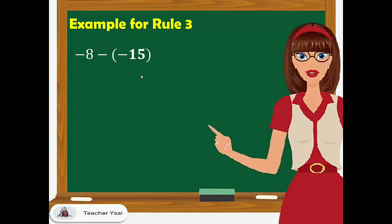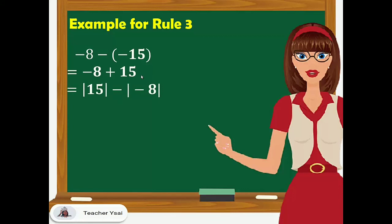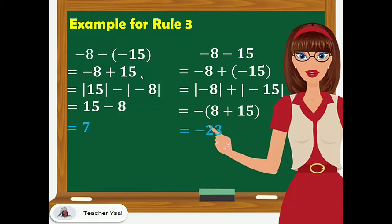Another example: negative 8 minus negative 15. We change the sign of the subtrahend: negative 15 becomes positive 15, and we proceed to addition — negative 8 plus 15. Following Rule 2, the absolute value of 15 minus the absolute value of negative 8: 15 minus 8 equals 7. Another example: negative 8 minus 15 becomes negative 8 plus negative 15. Since they have the same sign, we apply Rule 1: the absolute value of negative 8 plus the absolute value of negative 15, prefixing the common negative sign. Negative times (8 plus 15) equals negative 23.